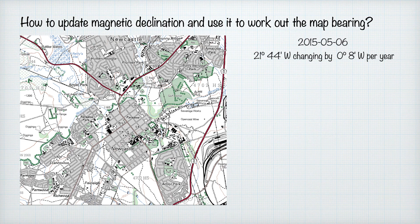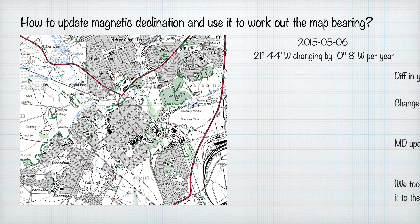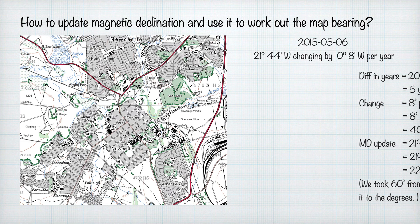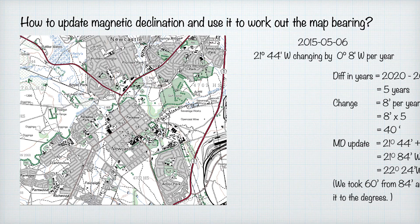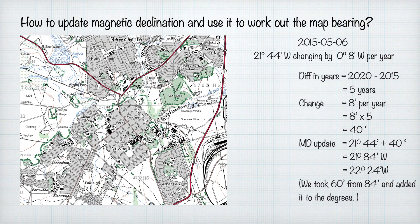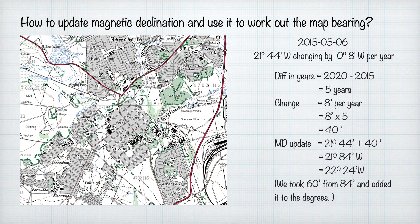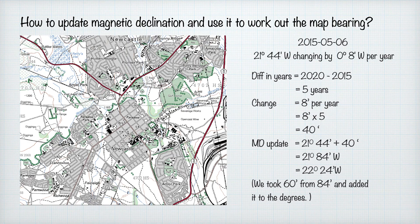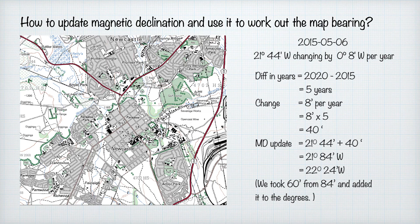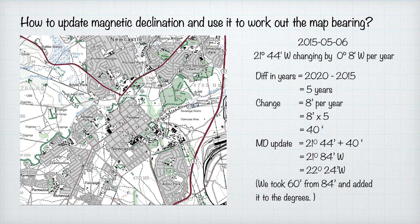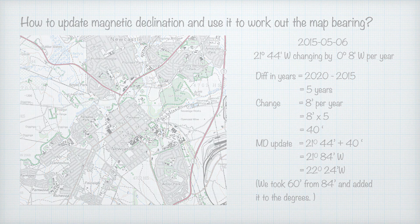Here is an example: a map gives the magnetic declination for 2015 as 21 degrees 44 minutes west, changing 8 minutes west per year. To update it for 2020, we take 2020 minus 2015 = 5 years. Five years times 8 minutes = 40 minutes. Because it's moving west the declination is increasing, so we add 40 to 44, giving 21 degrees 84 minutes. Since 84 is greater than 60, we subtract 60 and carry 1 degree, giving a final answer of 22 degrees 24 minutes.